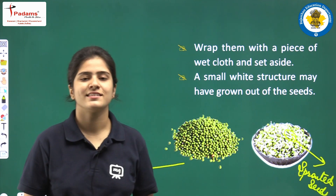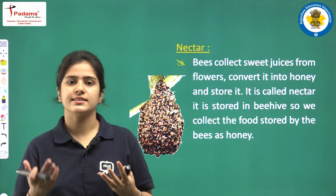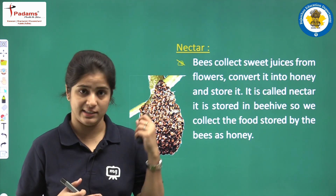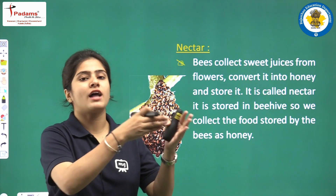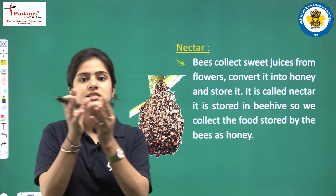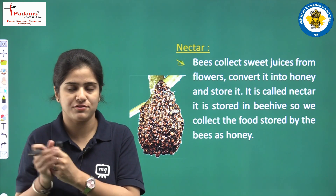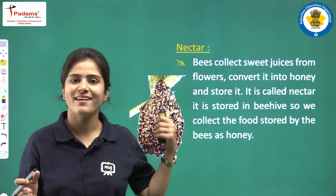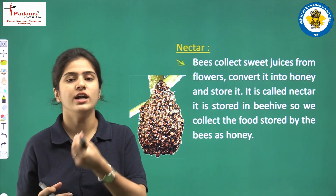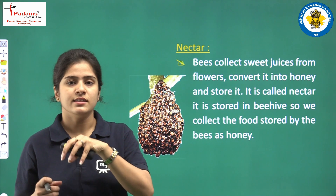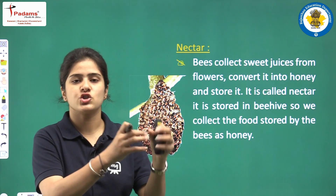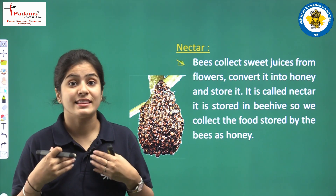That was all about sprouted seeds. Now we will discuss nectar. Honeybees are the bees that give us honey. Honeybees roam from flower to flower and collect the sweet juices from the flowers. They keep those sweet juices stored in the beehive. These sweet juices are called nectar. From that nectar stored in the beehive, we extract and get our honey.